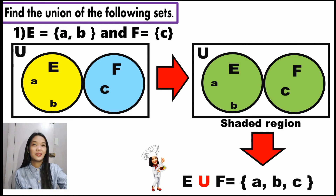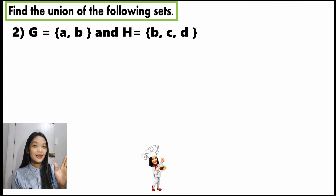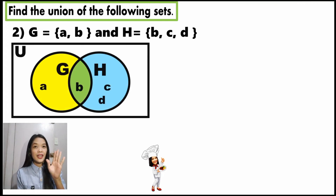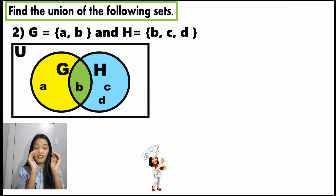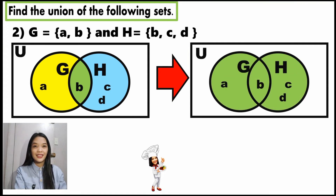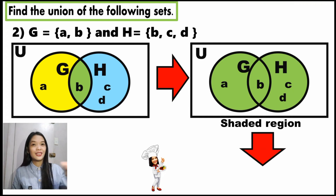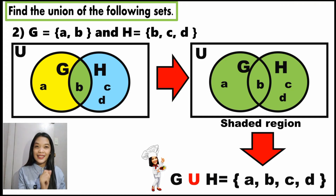Check your answers. And for number 2, set G has elements A and B, and set H has elements B, C, and D. Observe — are there common elements? Yes, B is common to them. Therefore your illustration will show that A and B are part of G, and B, C, and D are part of H. Just simply combine the elements — the elements of G and H together. Therefore our shaded region will be our answer, and what are those elements? We have A, B, C, and D.